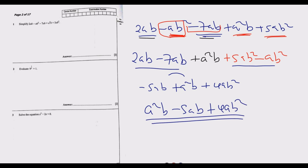When you come across a question that says simplify, evaluate, or complete, they all mean the same thing. So that's how you answer question one part (a). Part (b) says evaluate 9 to the power of one-half. What we need to know is that a to the power 1 over n equals the nth root of a.